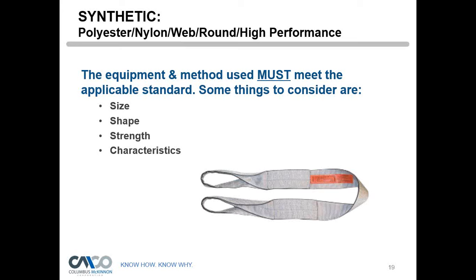When doing a chain inspection, look at the links carefully — don't just grab the chain and look at it in your hand. Separate some of the links and make sure they're not worn out. Remember that every single one of those links is articulating and wherever they are touching, they're wearing themselves out. That needs to be looked at.